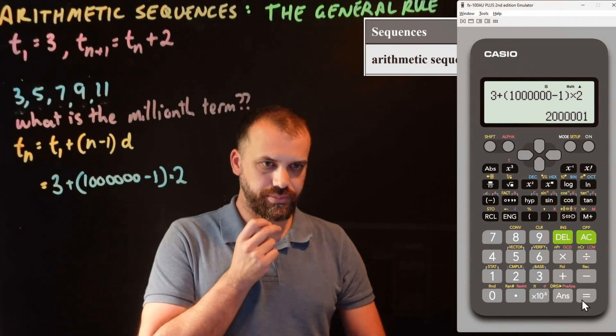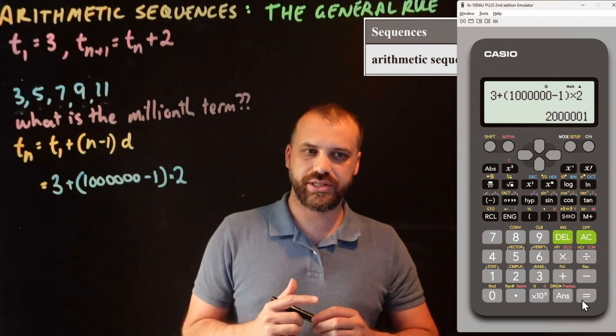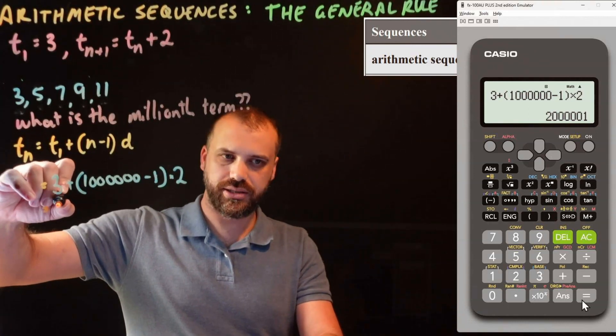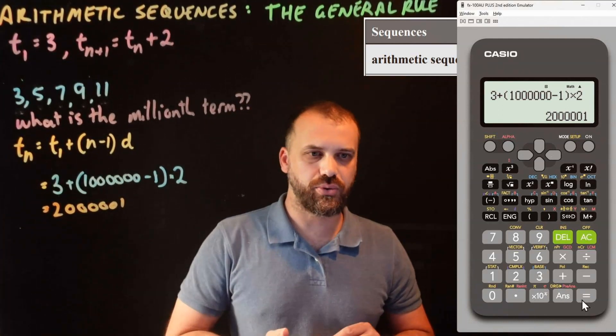Type 2 into my calculator. Bam. The millionth term of this sequence right here is 2 million and 1.